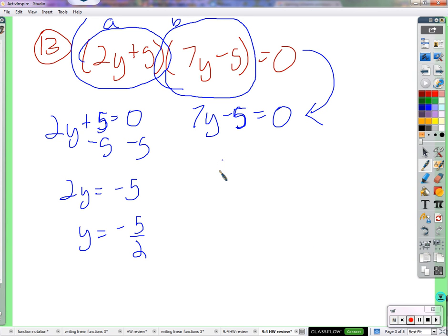Here, we're going to add 5 to both sides. If I had to get 7y equals positive 5, divide by 7, y equals 5 sevenths.